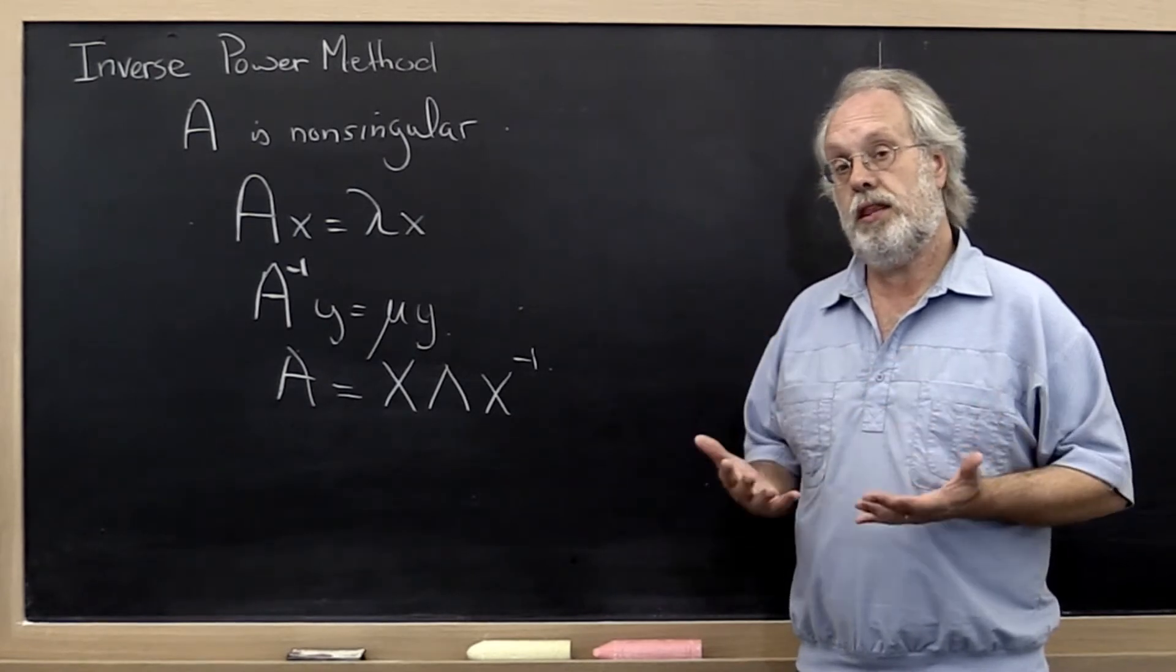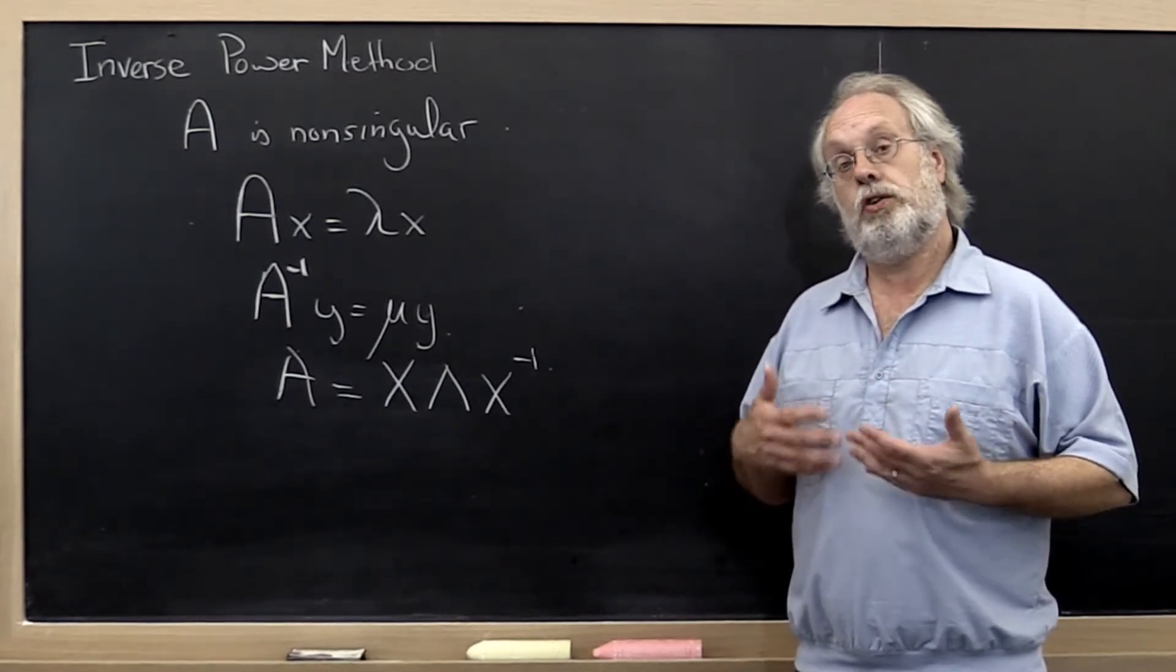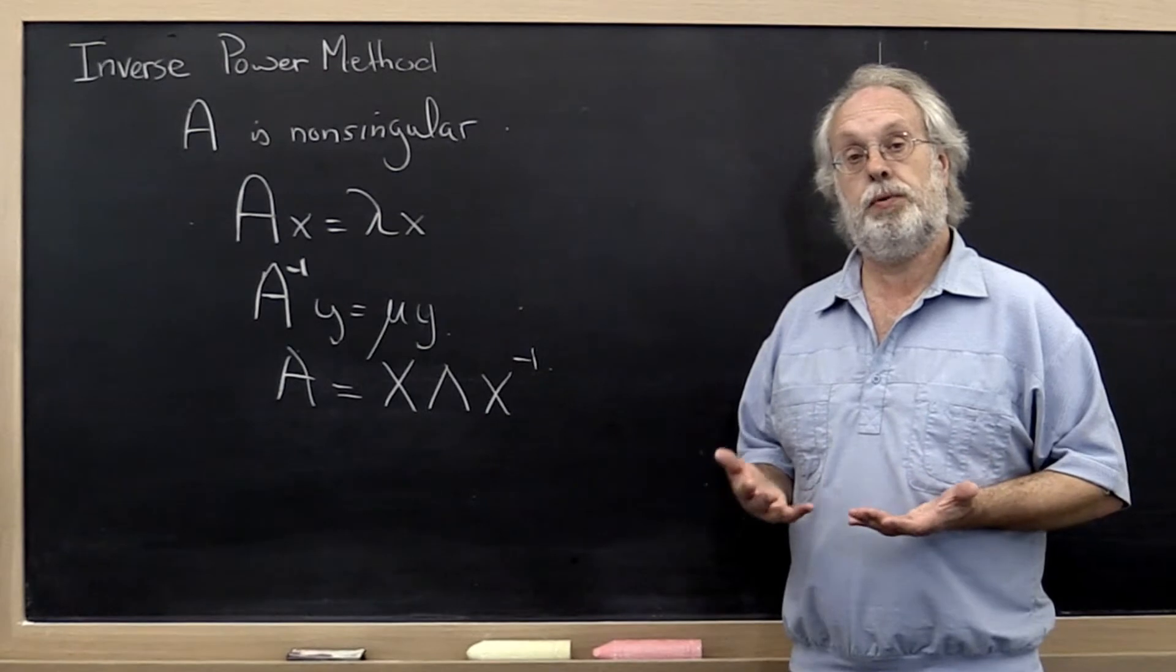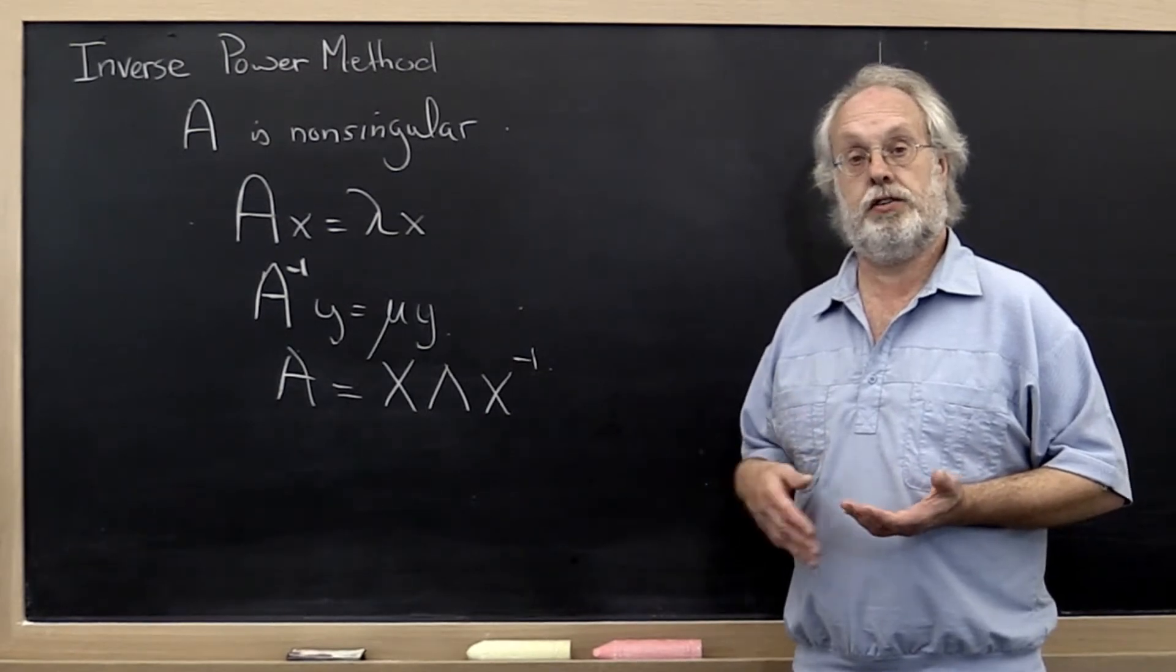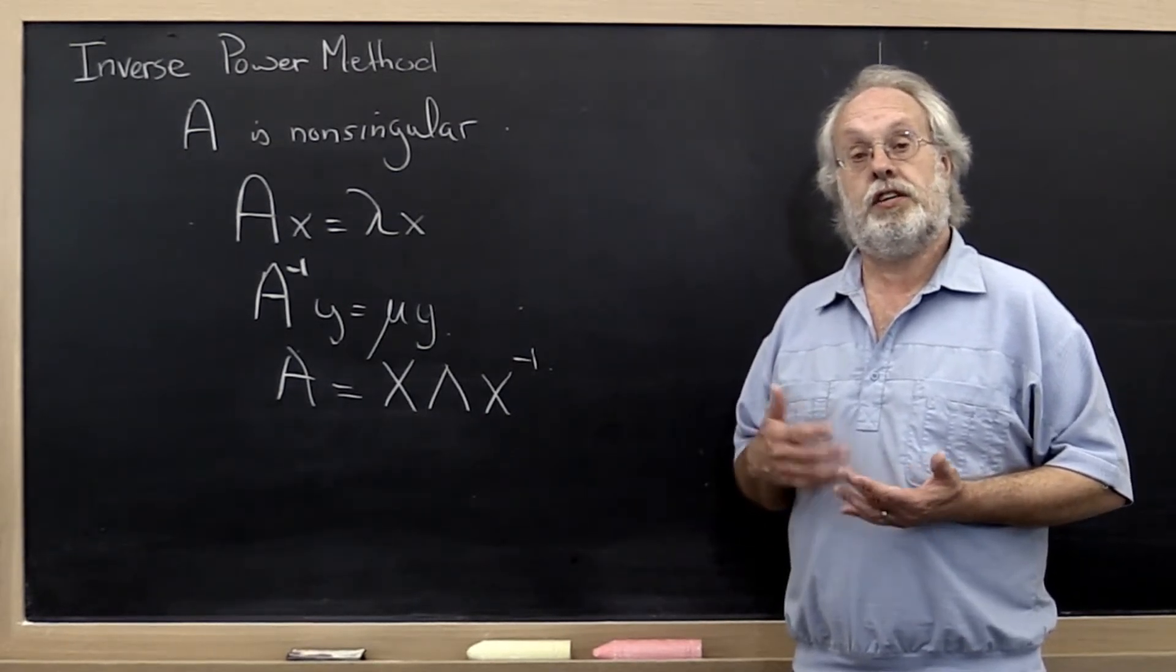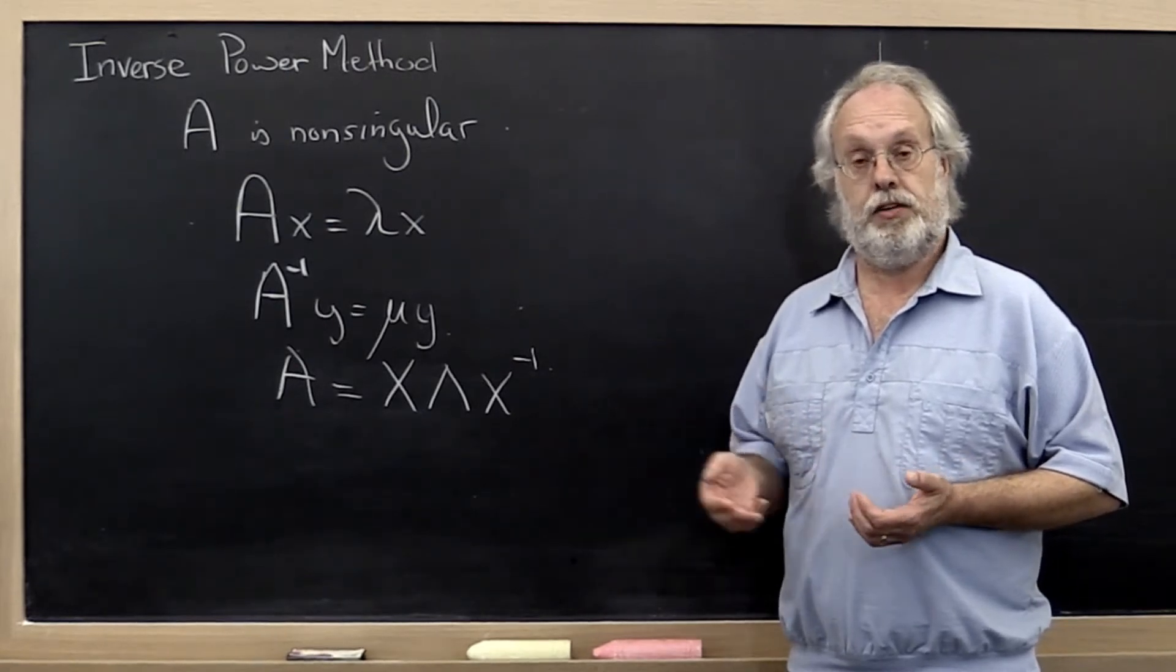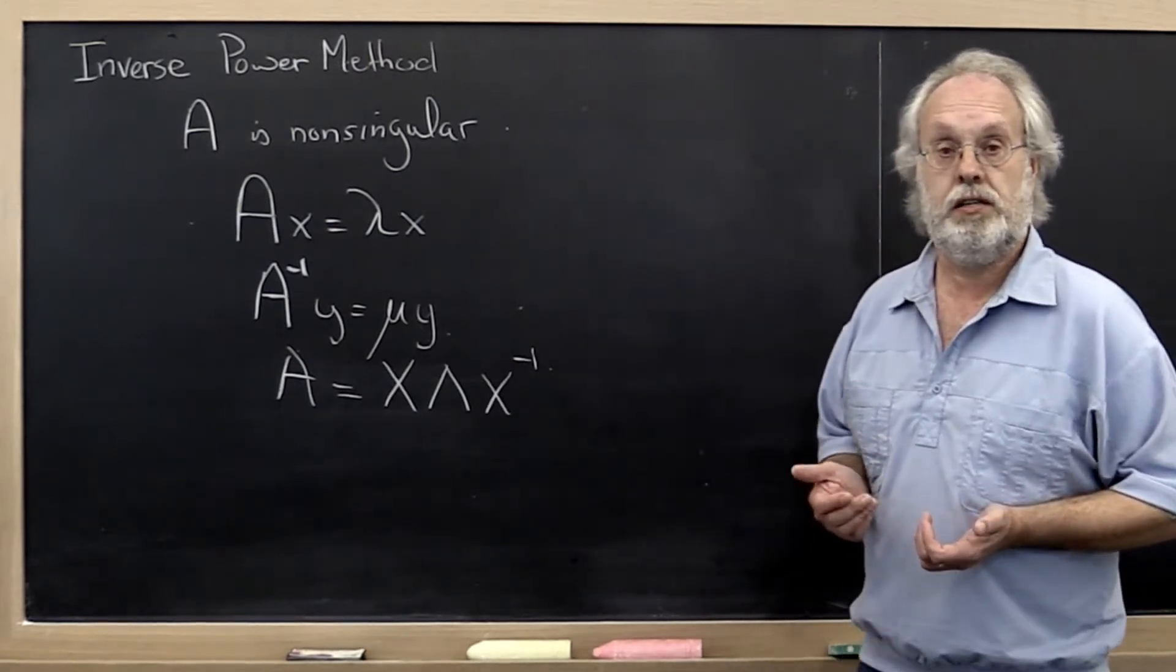To come up with a method for that, we are going to exploit the relationship between the eigenvalues and eigenvectors of a matrix and the eigenvalues and eigenvectors of the inverse of that matrix, if the matrix is non-singular. So let's assume that A is non-singular.